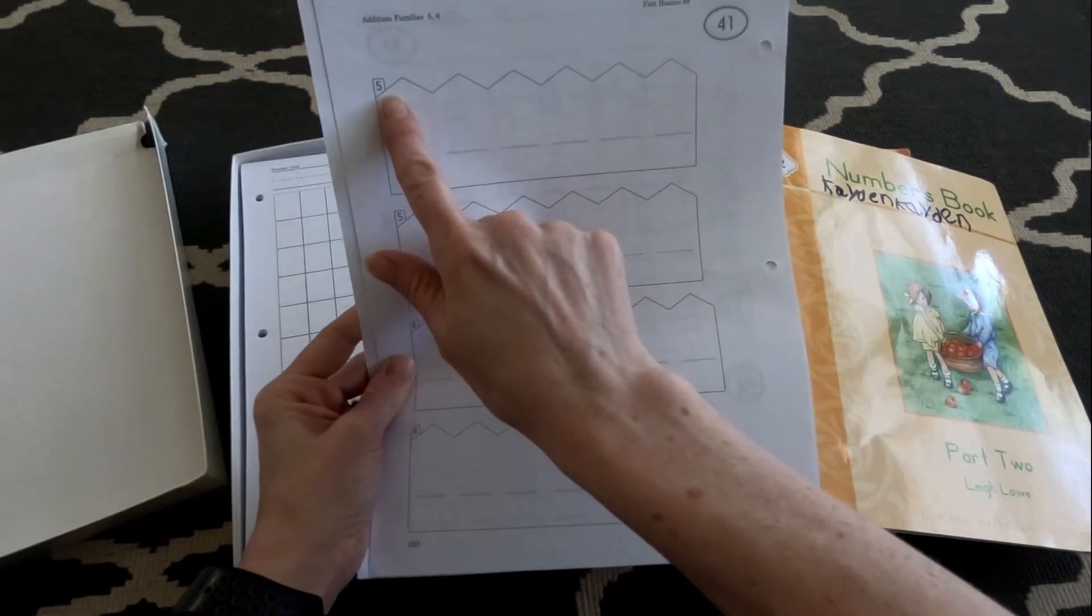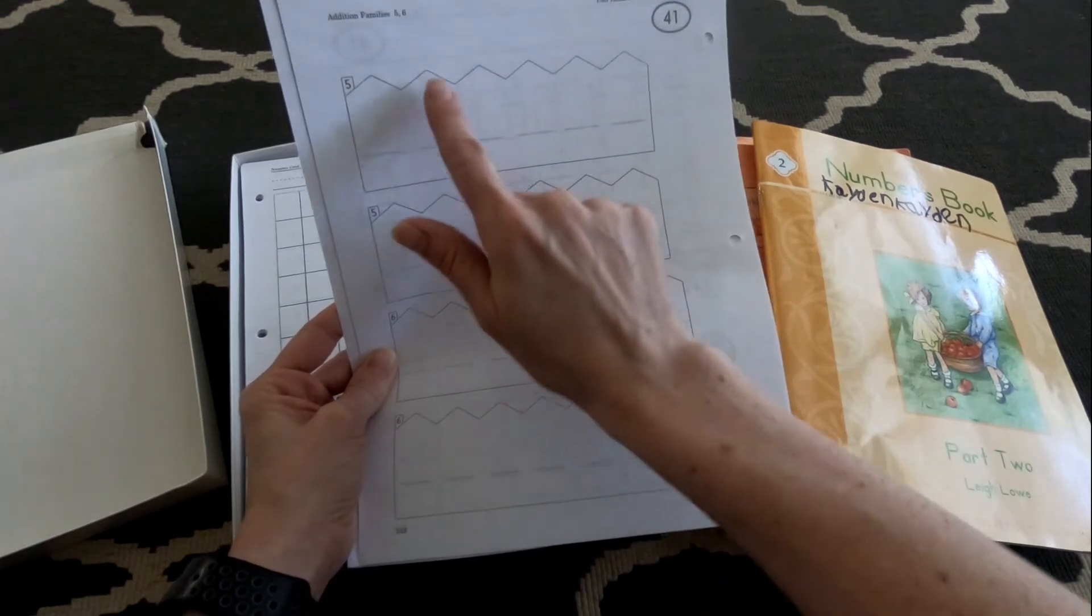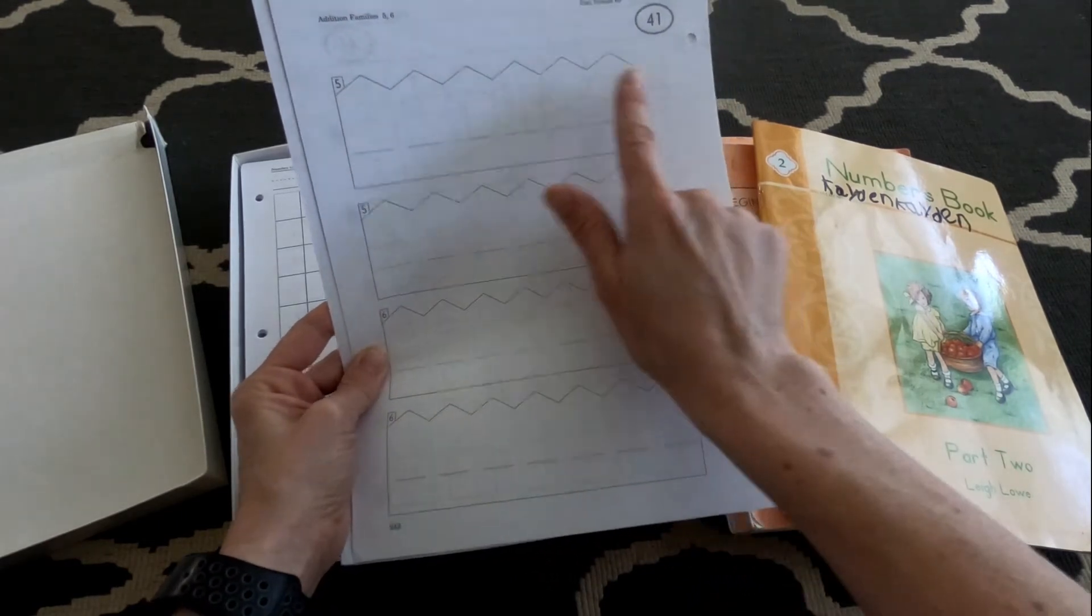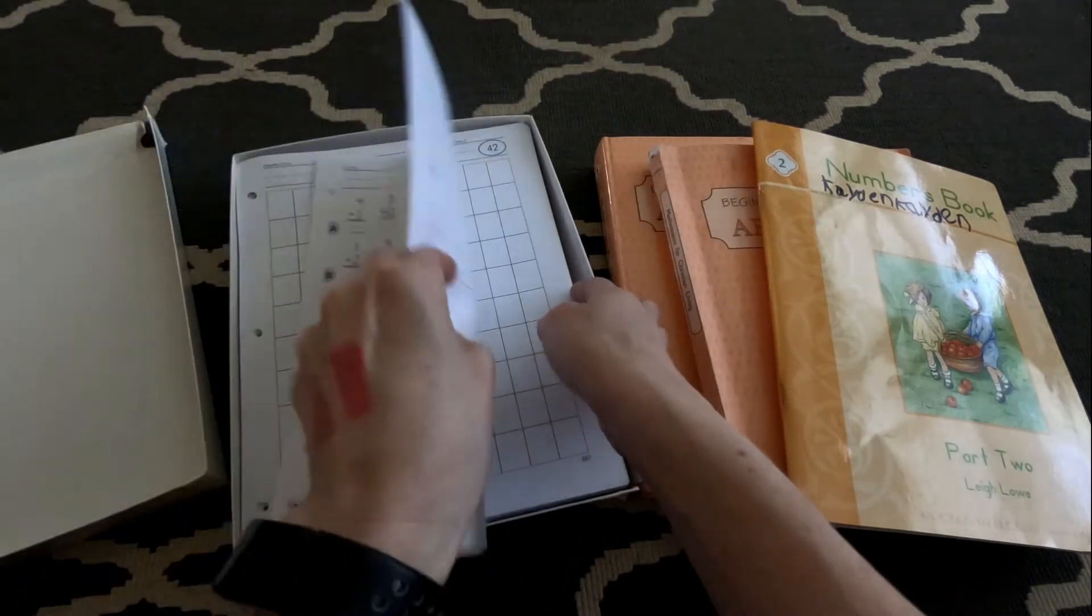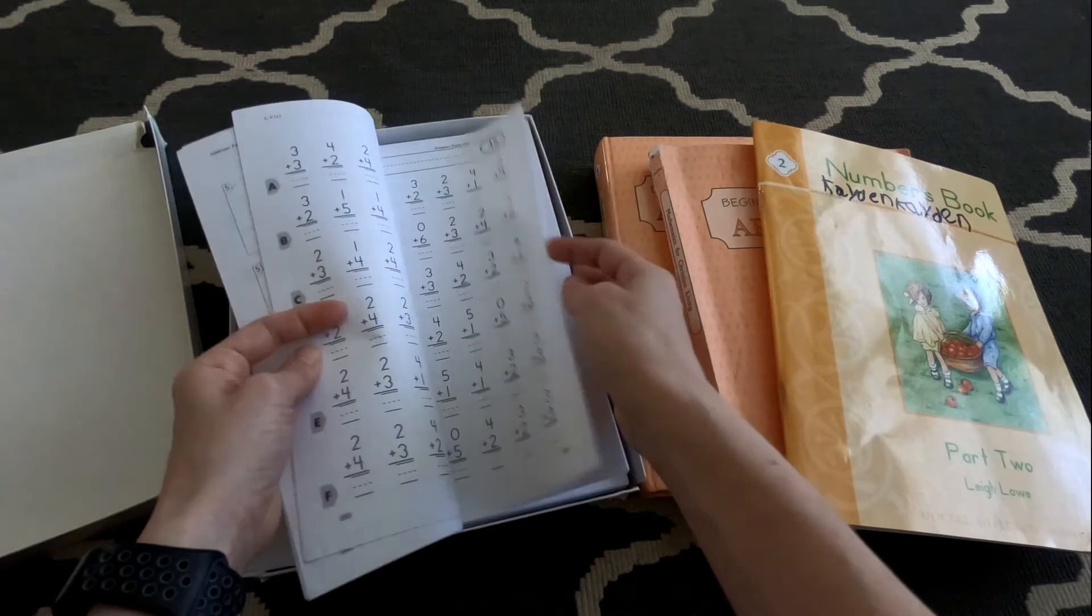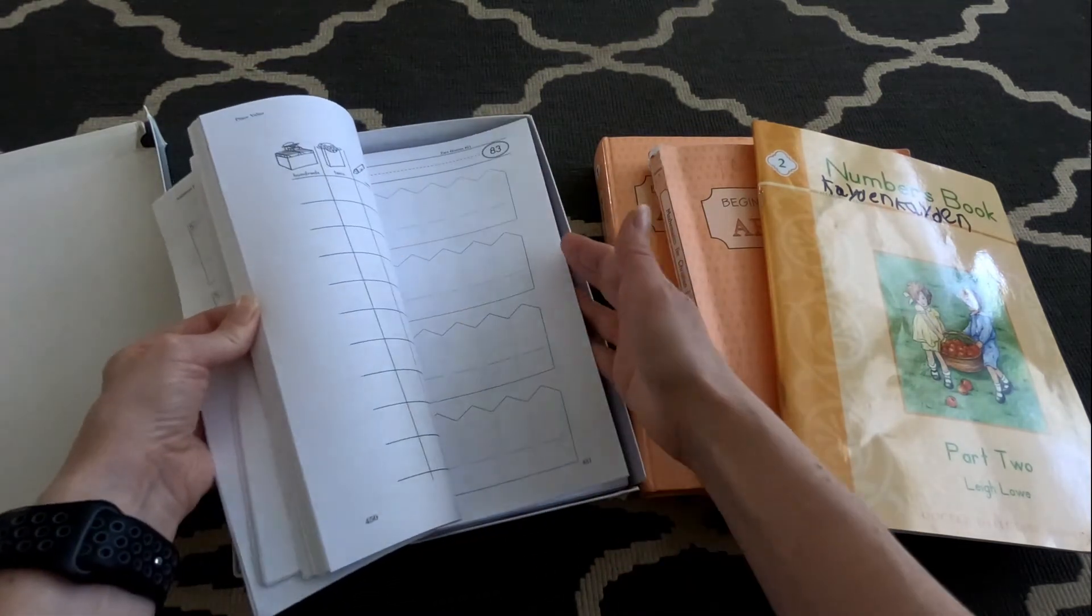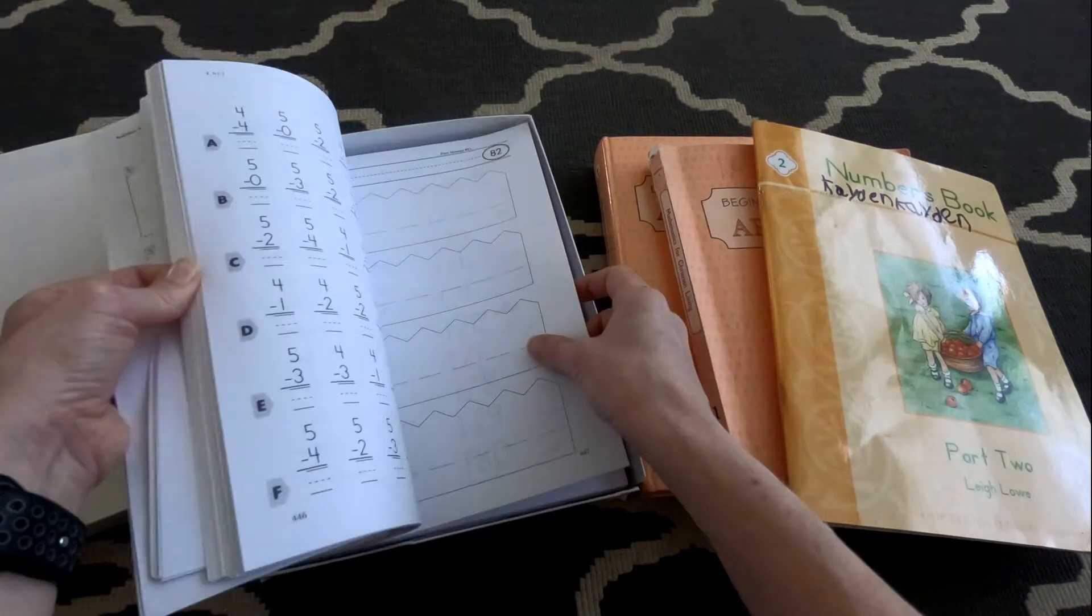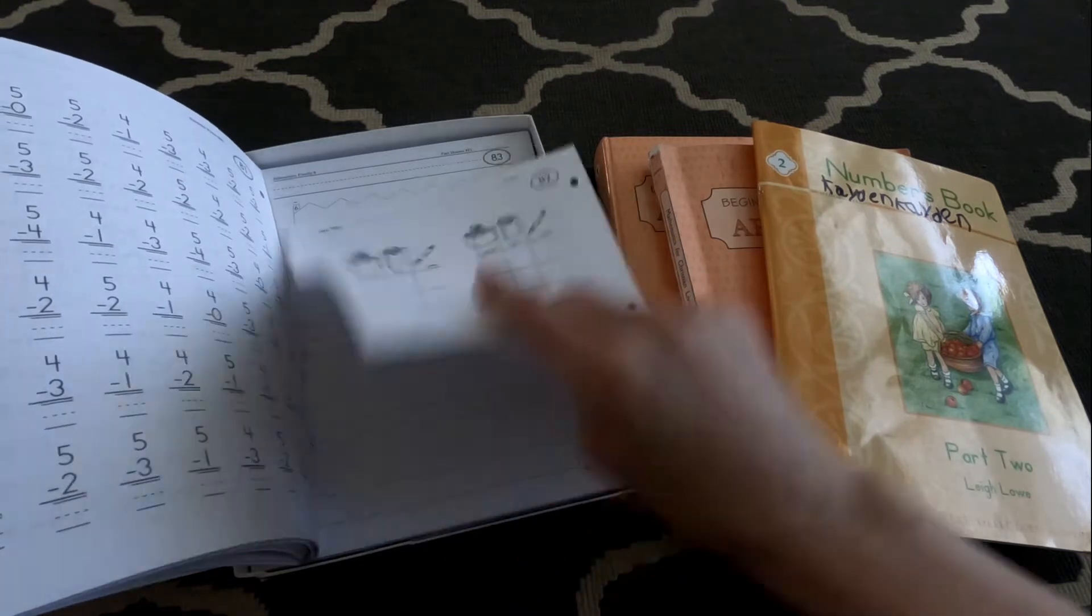Here's the fact house practice. So this would be for the five family. They would start filling in zero plus five equals five, one plus four, and then so on. And they would practice fives and sixes. More addition and subtraction. Let's see. Using, understanding the place value for hundreds, tens, and ones.